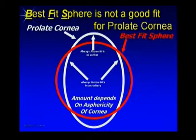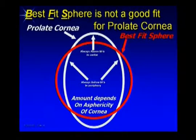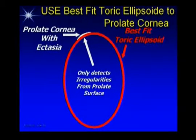For 25 years we've used a sphere as the reference for elevation above and below when looking at corneal data. But the cornea is not a sphere — it's an ellipse, an oval or football shape. Because we've used a sphere, trying to fit a basketball to a football, the central cornea always appears higher and the periphery always appears lower. The variation in elevation above the sphere can be 10 to 30 microns solely due to asphericity. If we instead fit with a toric ellipsoid — the ellipse that best fits the cornea — only true irregularities on the surface show up, both front and back.